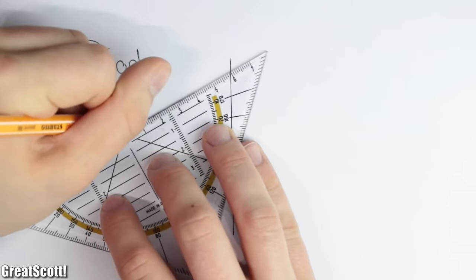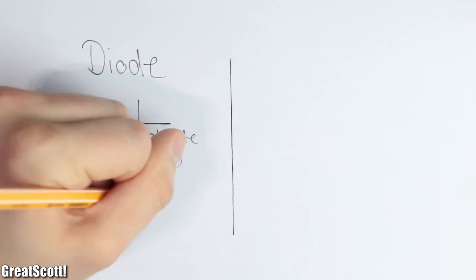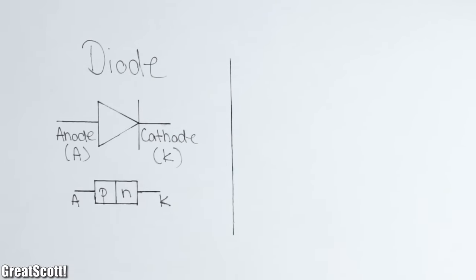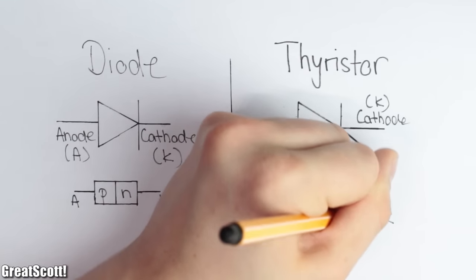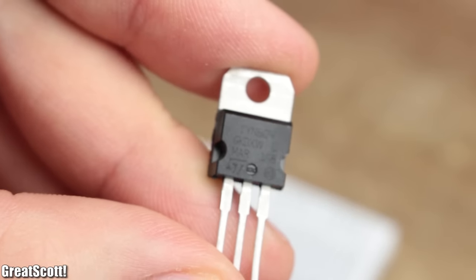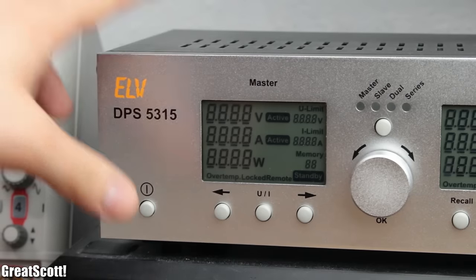First off, the internal structure. While the diode consists of two semiconductor layers with an anode and cathode terminal, the thyristor consists of four layers and adds an additional gate terminal as well. As a practical example I will use a TYN604 whose pinout can easily be found in the datasheet.